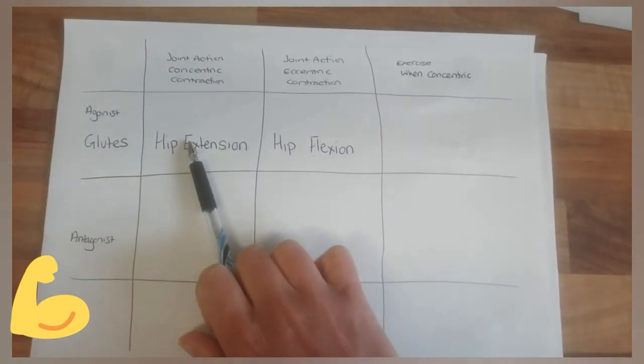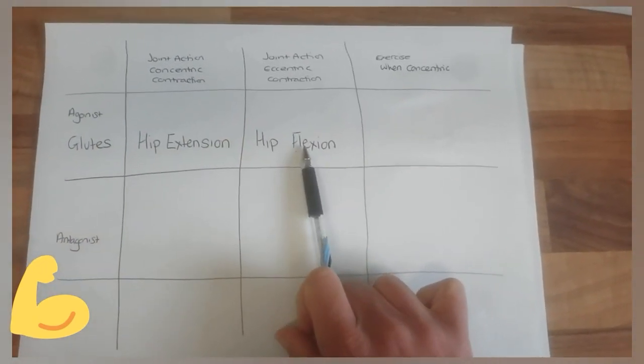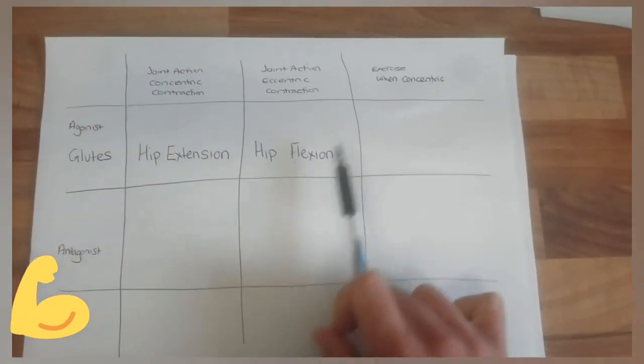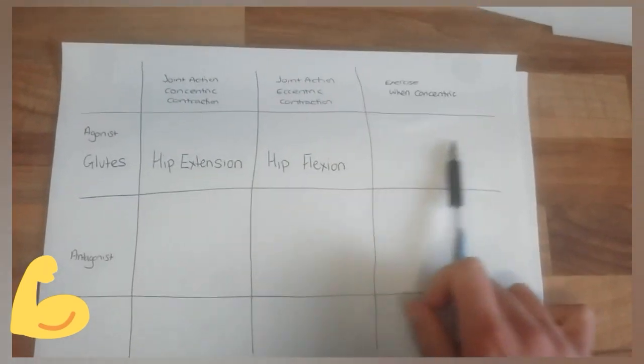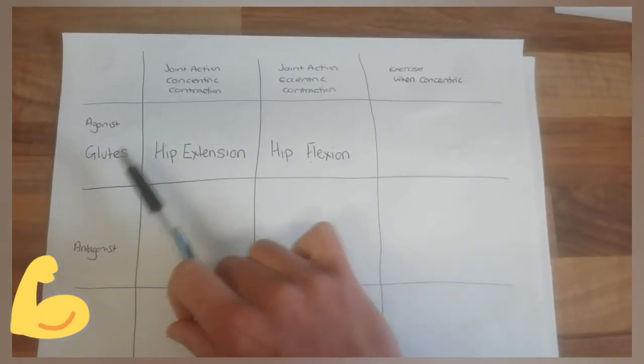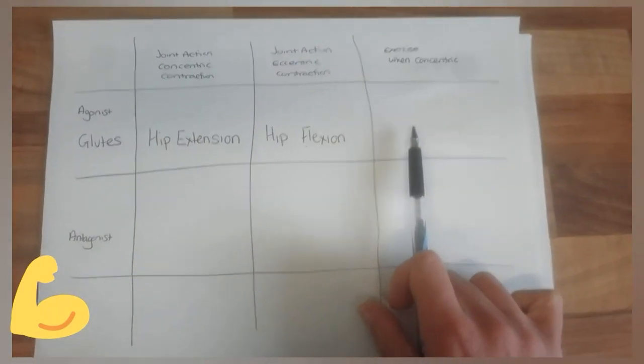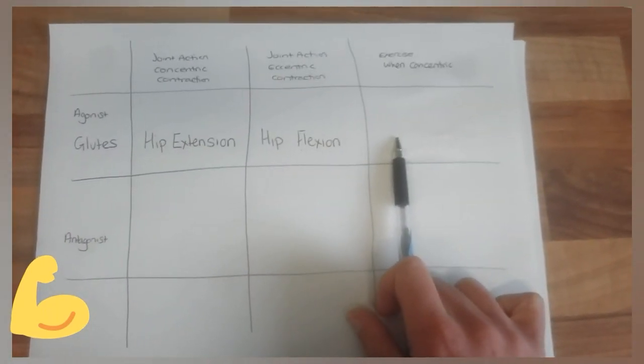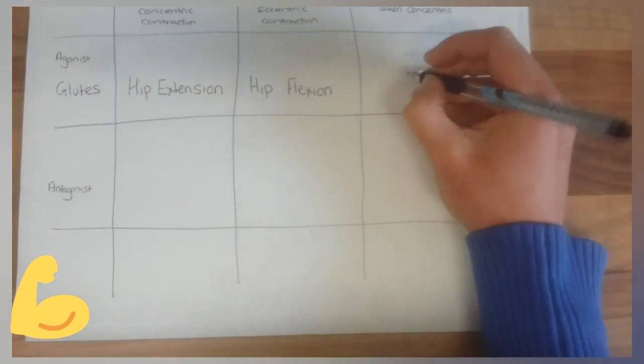One created by a concentric contraction, one created by an eccentric contraction. Then you just need to know what exercise would work for hip extension. So for glutes, what exercise would work when I'm having a concentric contraction of the glutes? We're going to put squats in here.